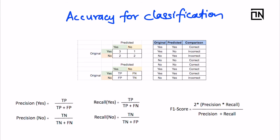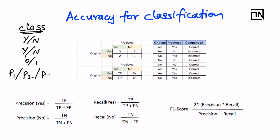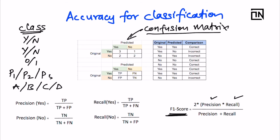For classification, you predict a class — for example, whether a loan should be approved or not, whether a transaction is fraudulent, or multi-class outputs like P1, P2, or P3. As mentioned, F1 score is the final metric. F1 score is based on precision and recall, and precision and recall are based on something called a confusion matrix.